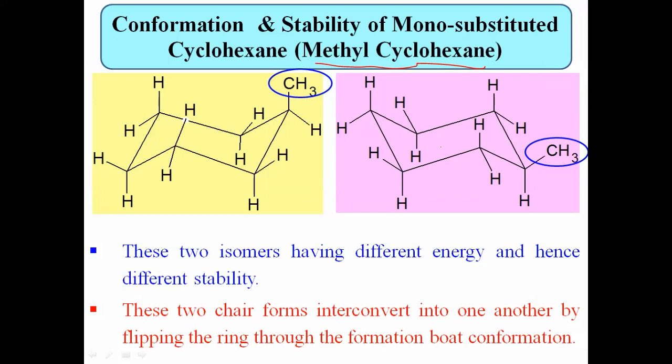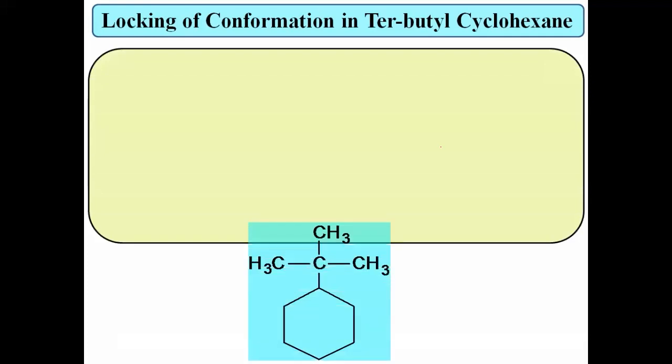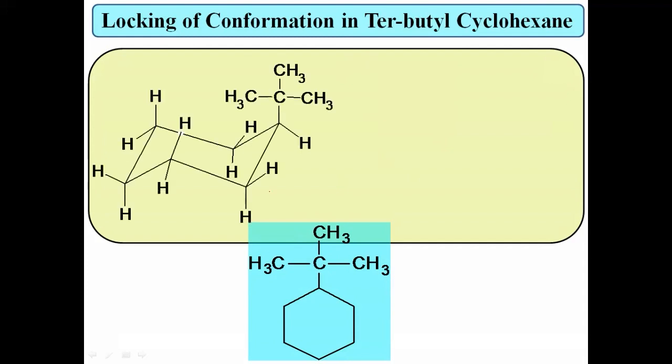The equatorial isomer is more stable. Now let us look at the next point: locking of conformation in tertiary butyl cyclohexane. When we examine the conformations of tertiary butyl cyclohexane, we will explain how it causes locking of conformation. This is tertiary butyl cyclohexane — instead of the methyl group, there is now a tertiary butyl group. This compound is not a planar structure; it has two conformations, and the first is the chair conformation.